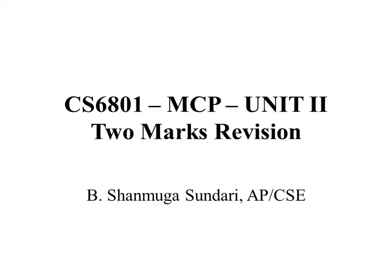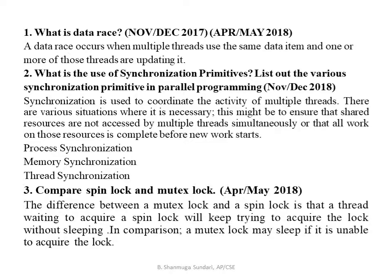This PPT covers the two marks from unit 2. First question: what is a data race? A data race occurs when the same data items are accessed by multiple threads at the same time, and multiple threads try to update that data.